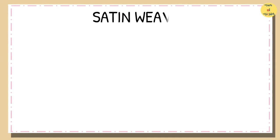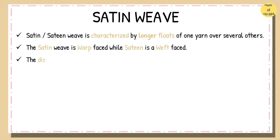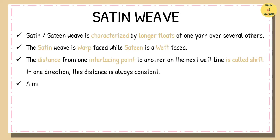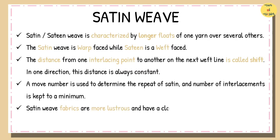Satin Weave. Satin or sateen weave is characterized by longer floats of one yarn over several others. The satin weave is warp faced while sateen is weft faced. The distance from one interlacing point to another on the next weft line is called shift. In one direction, this distance is always constant. A move number is used to determine the repeat of satin, and the number of interlacements is kept to a minimum. Satin weave fabrics are more lustrous and have a closed, smooth, and dense appearance.